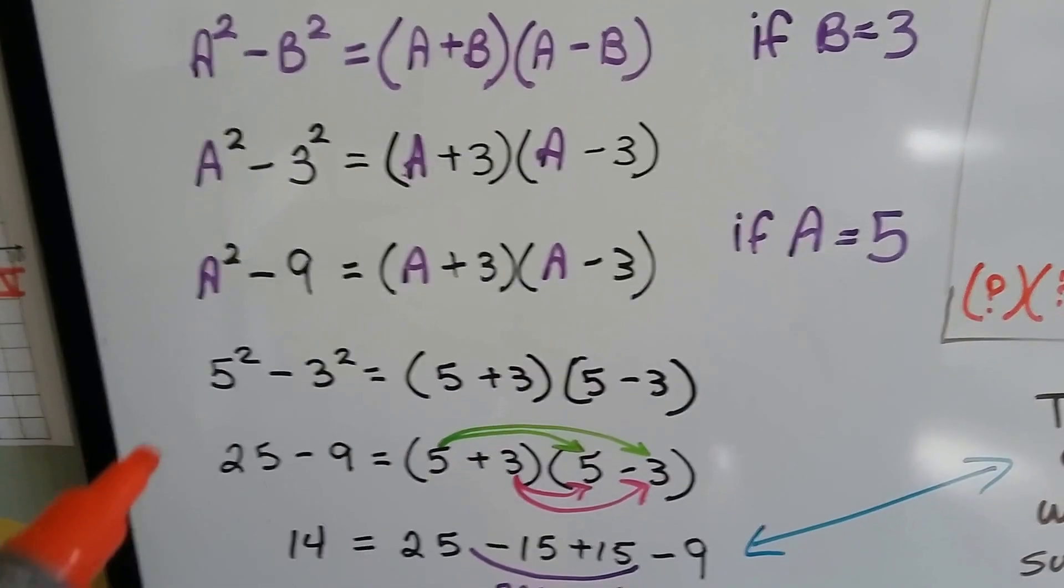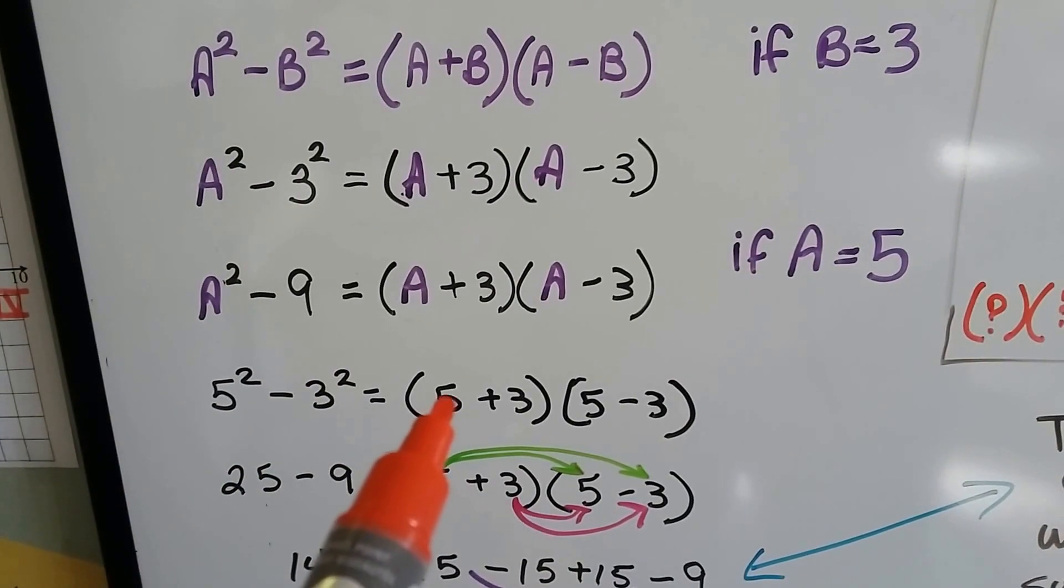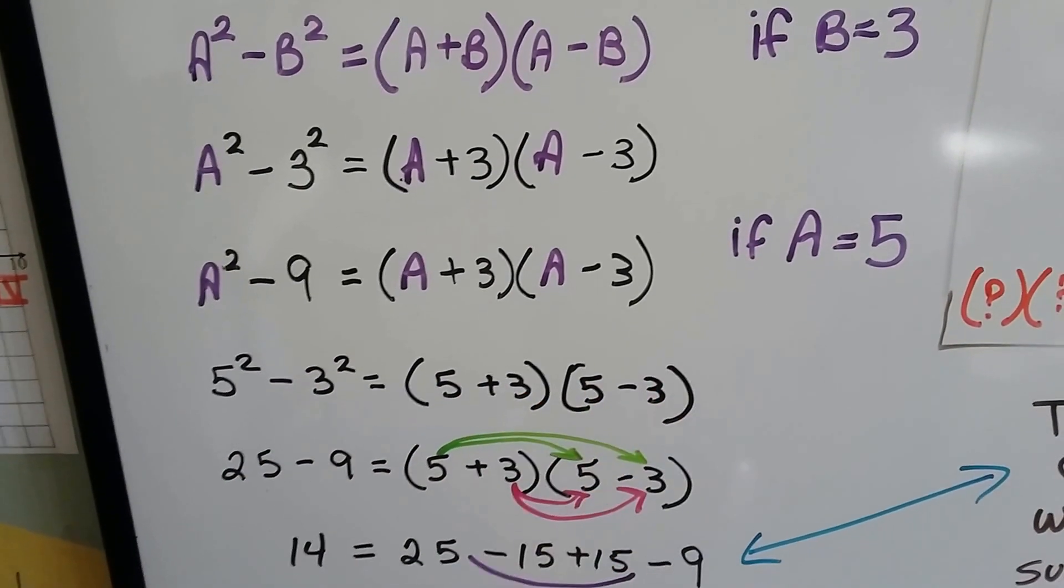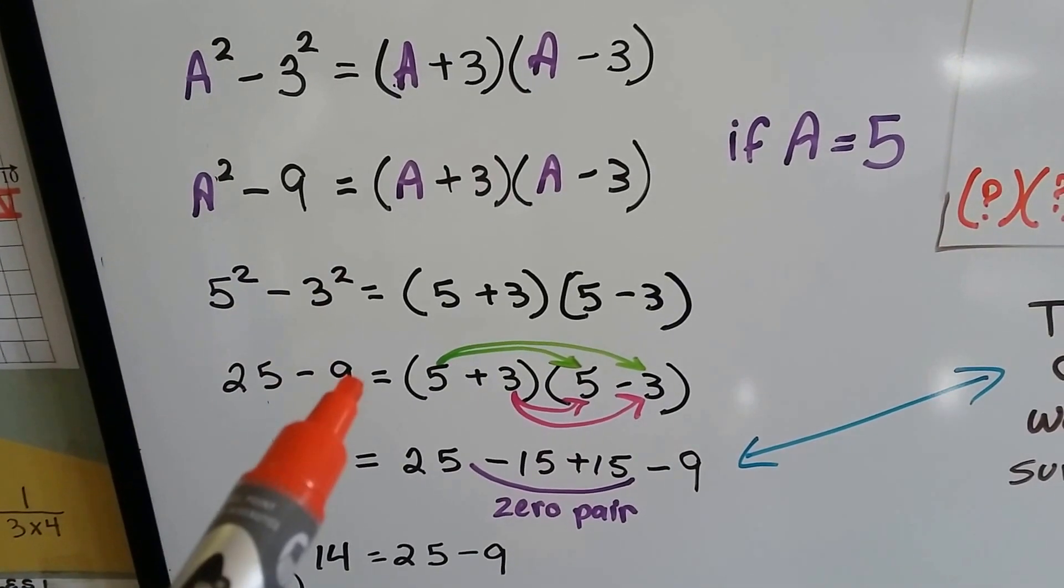What if a was 5? We could write it as 5² minus 3². And we could write it as (5+3)(5-3). We could even do FOIL. We could do 25 minus 9.